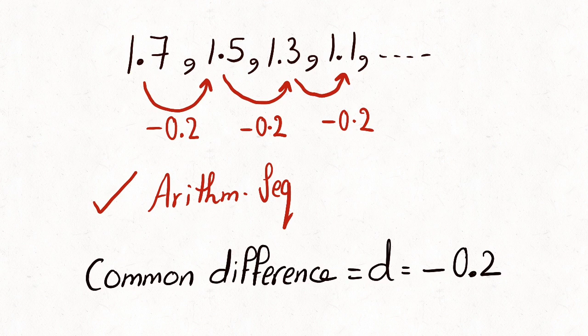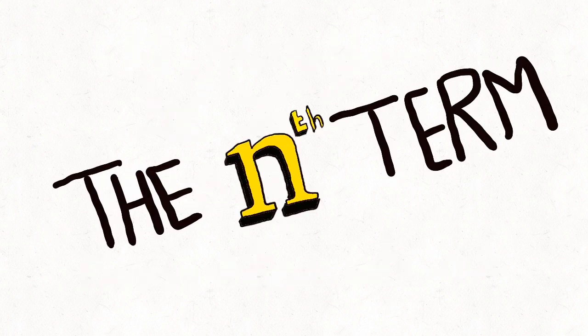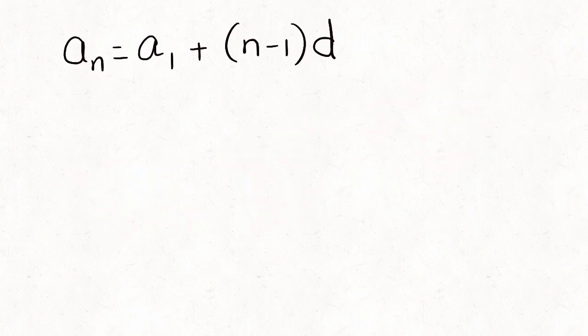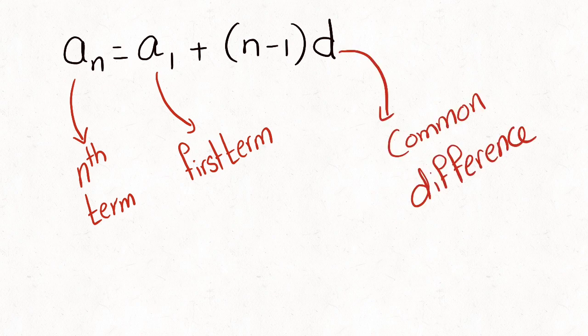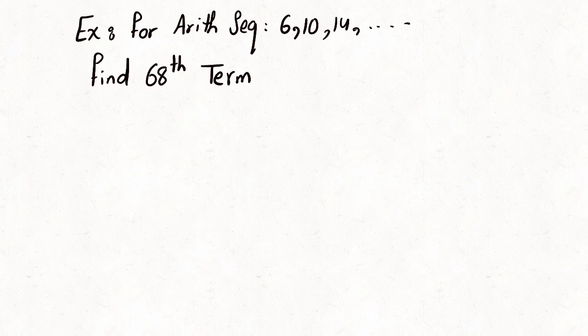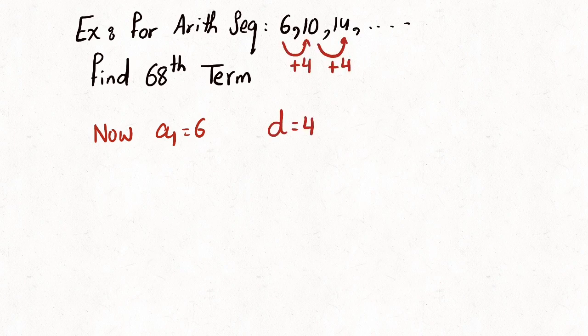The nth term in an arithmetic sequence is: a_n = a1 + (n − 1) × d, where a1 is the first term and d is the common difference. For example, find the 68th term in the following arithmetic sequence. First, we identify that a1 is equal to 6 and the common difference d is equal to plus 4.